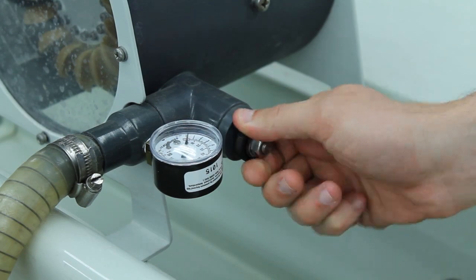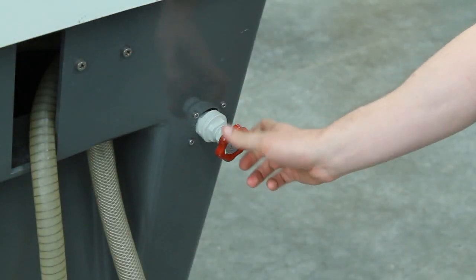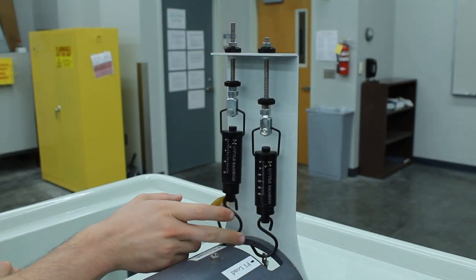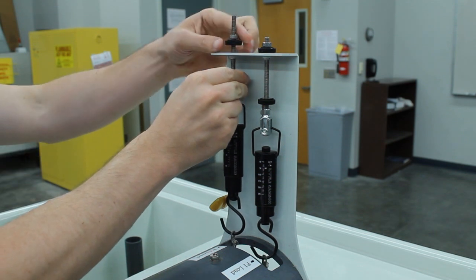Close both the spear valve on the Pelton Wheel Turbine and the valve on the hydraulics bench. There should be no tension in the cord connecting the spring balances before starting the experiment.